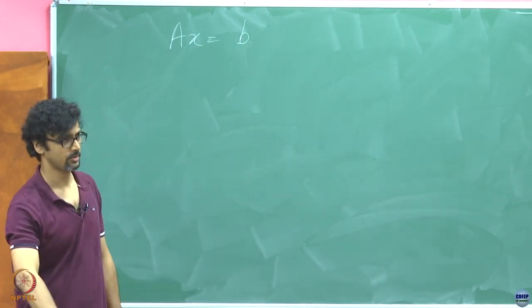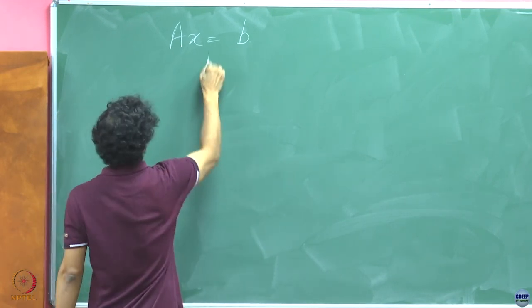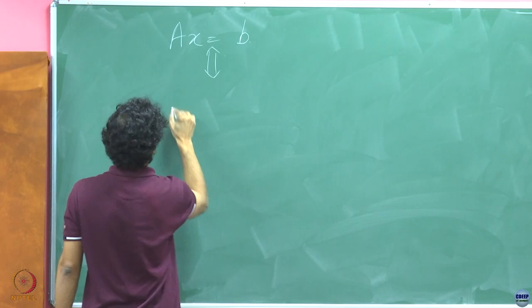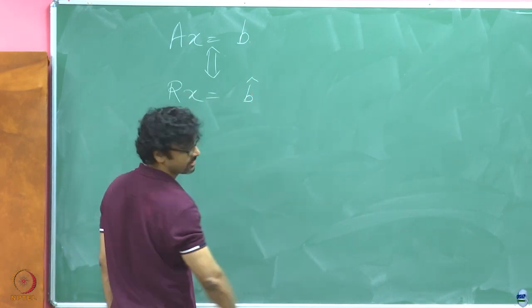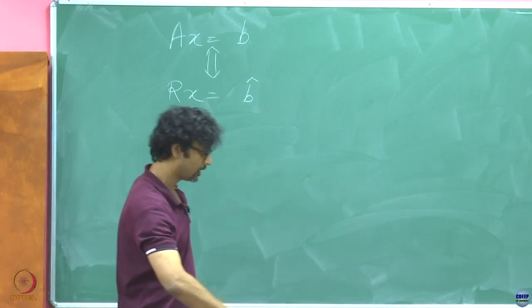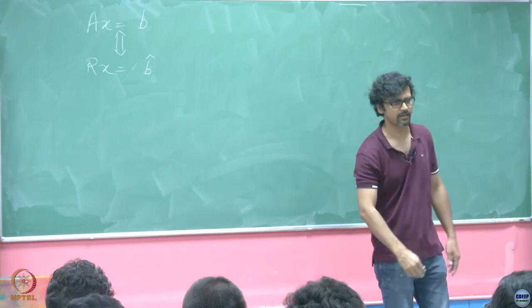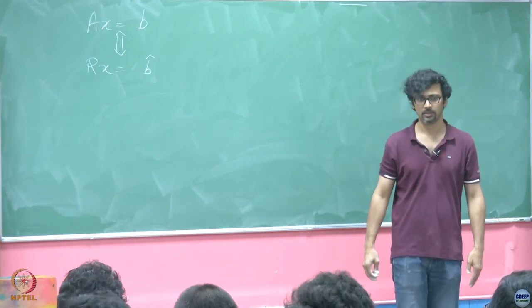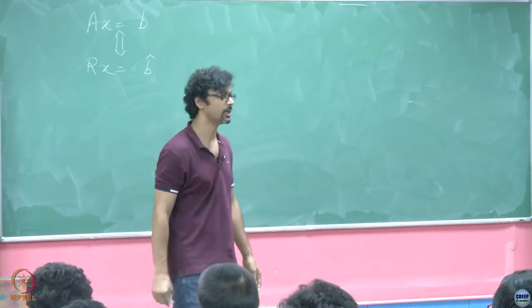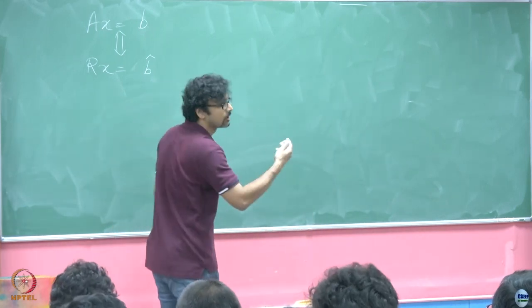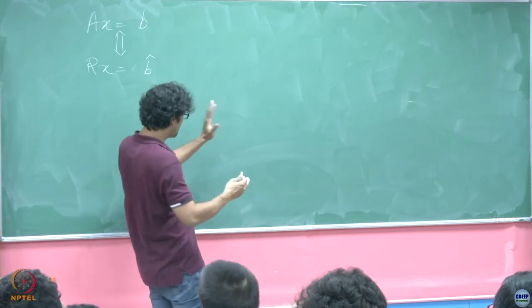So we know that a recipe for cooking up a simpler looking system of equations is to get to Rx equals b hat. Now if you have done a preliminary course on matrix theory in your undergrad first year courses, you have encountered this sort of thing. You might recall that somebody gave you a condition like the rank of a matrix.